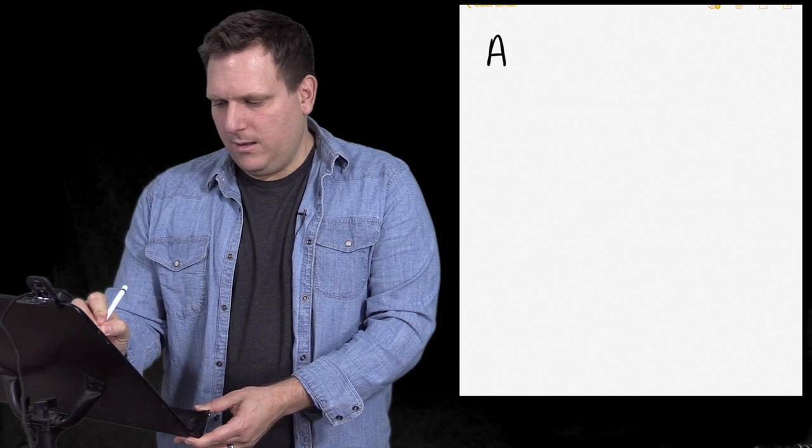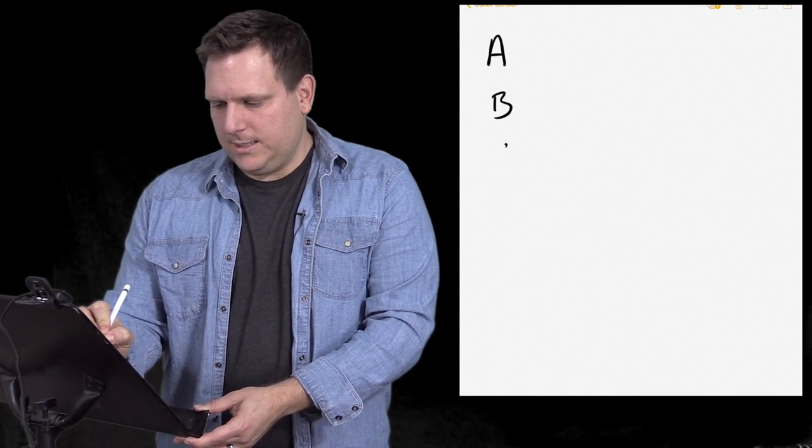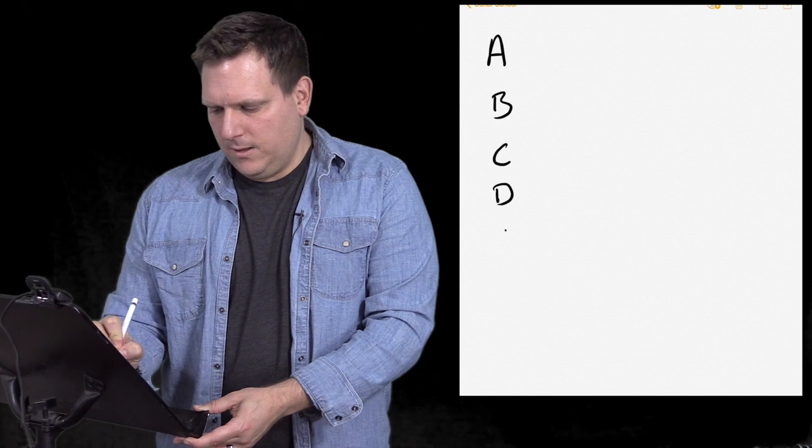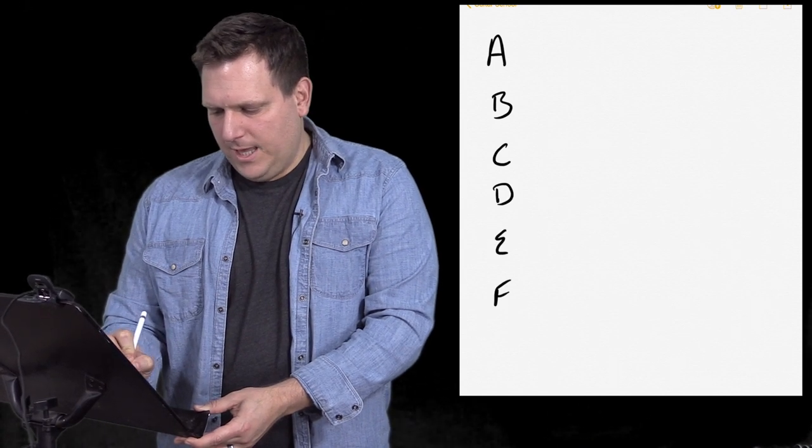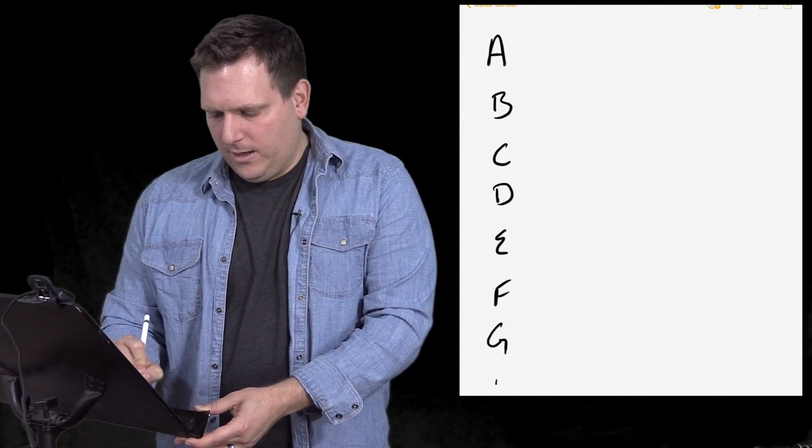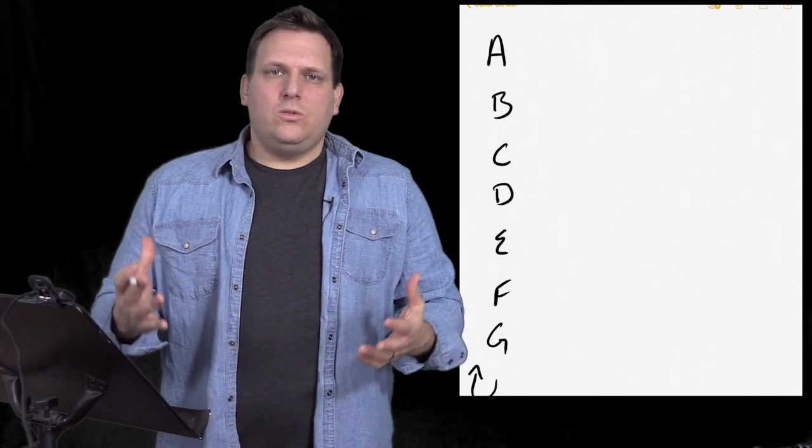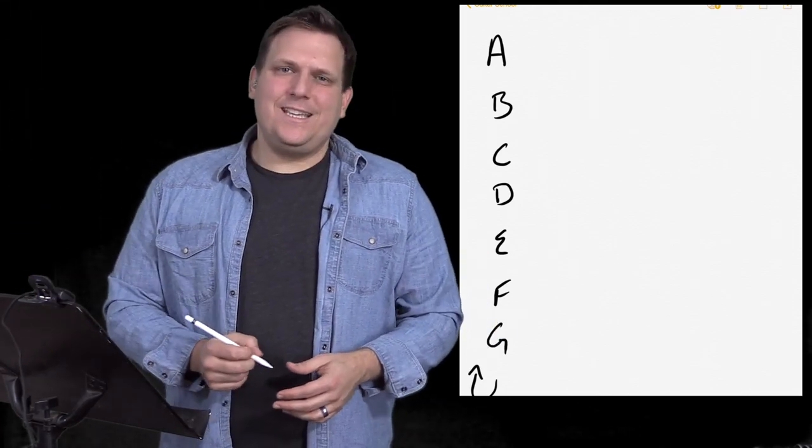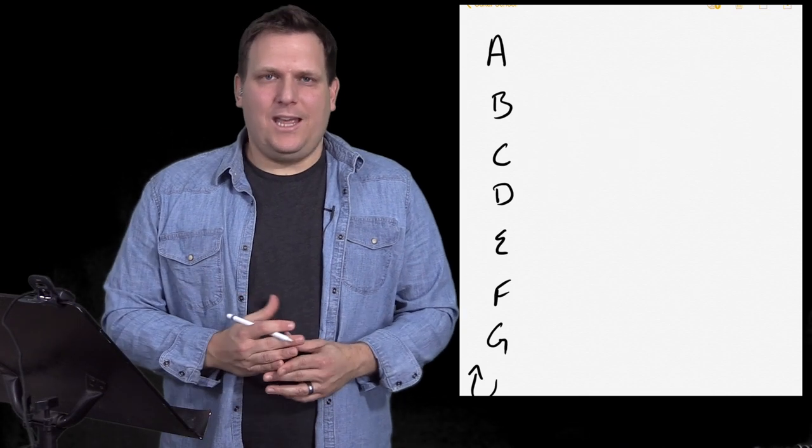So the musical alphabet is simply just A, B, C, D, E, F, and G. And then that goes back up to A, right? So you have A, B, C, D, E, F, G back to A.